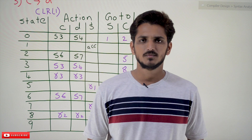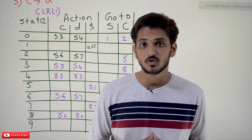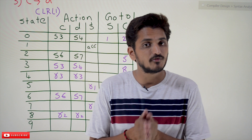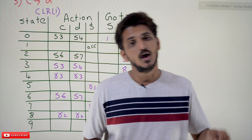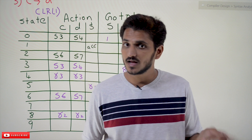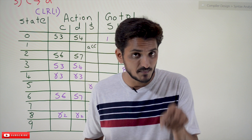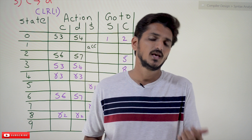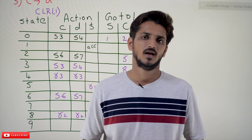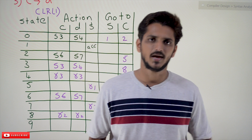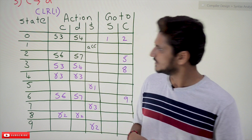Hi, welcome to Learning Monkey. I am Raghu. In this class we will discuss about canonical LR(1) table construction. In our previous classes we already discussed about LR(1) item construction. This is a continuation class for the same example which we discussed previously. We will construct the canonical LR(1) table. Please watch our previous class and come back here; the link for the playlist is provided in the description below.